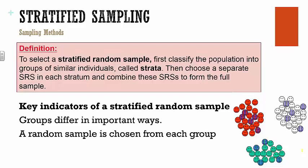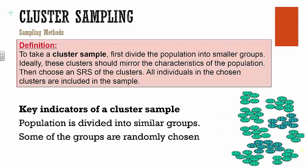Next we have a cluster sample, which is very similar to stratified. You again break your population into smaller groups, but the difference is that within these groups each group mimics the population — instead of having a group of all Black students, you'd have Black, White, Hispanic, Asian — each ethnicity represented in each cluster. Once you break them into groups where each group represents the entire population, you do a simple random sample to pick entire clusters rather than selecting five from each group.